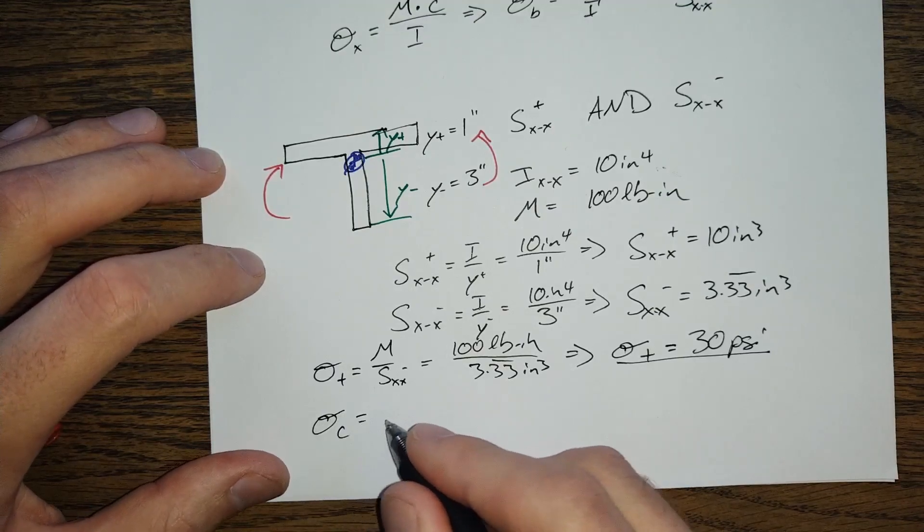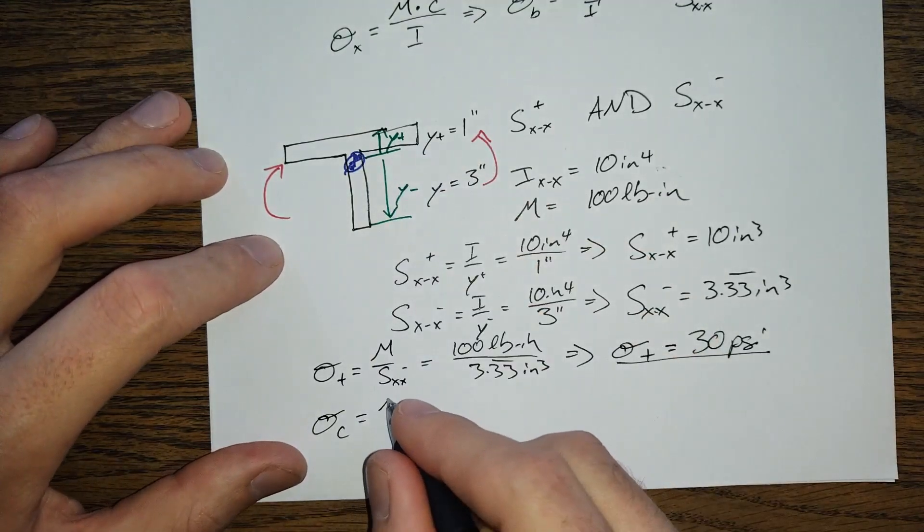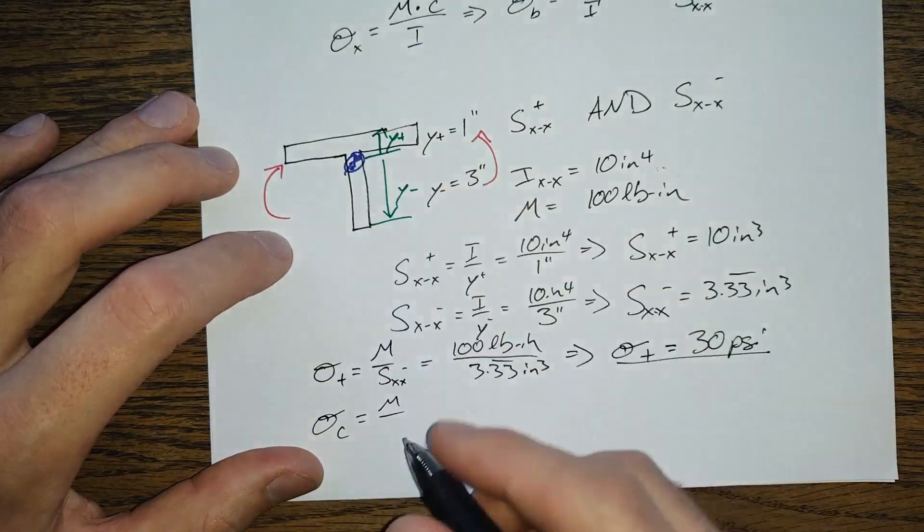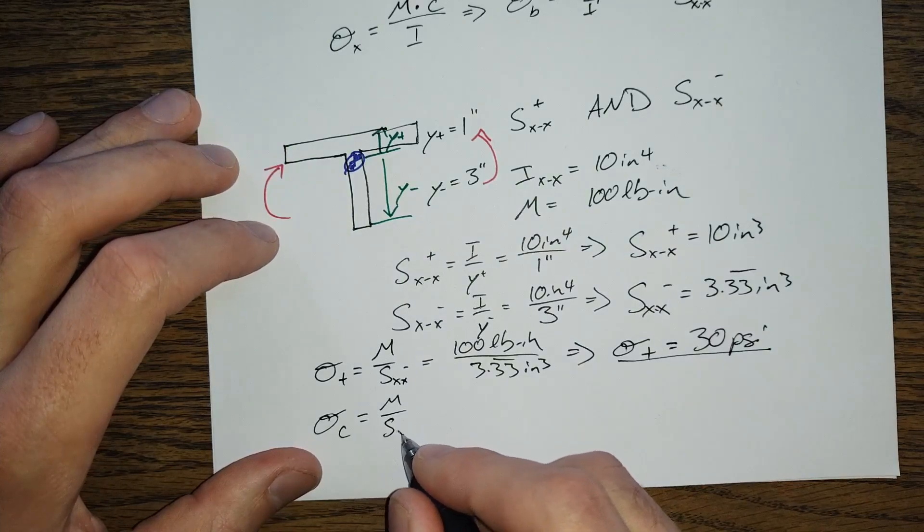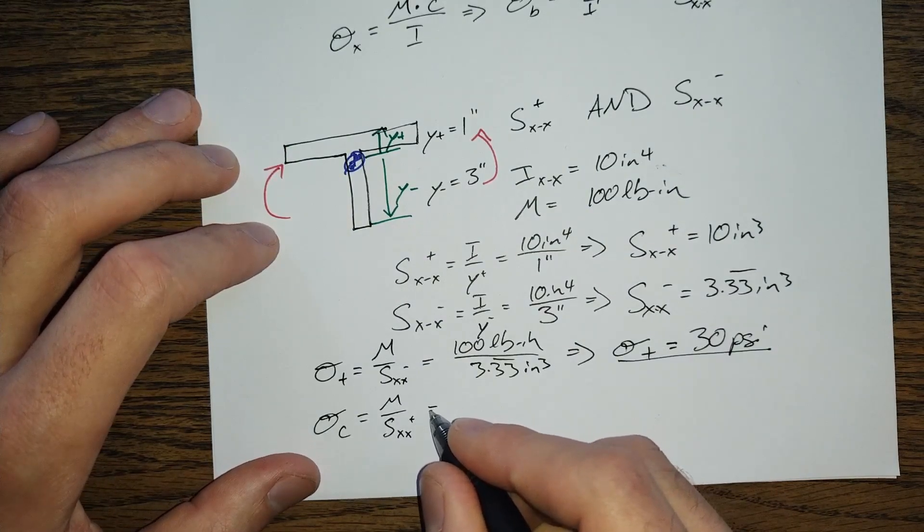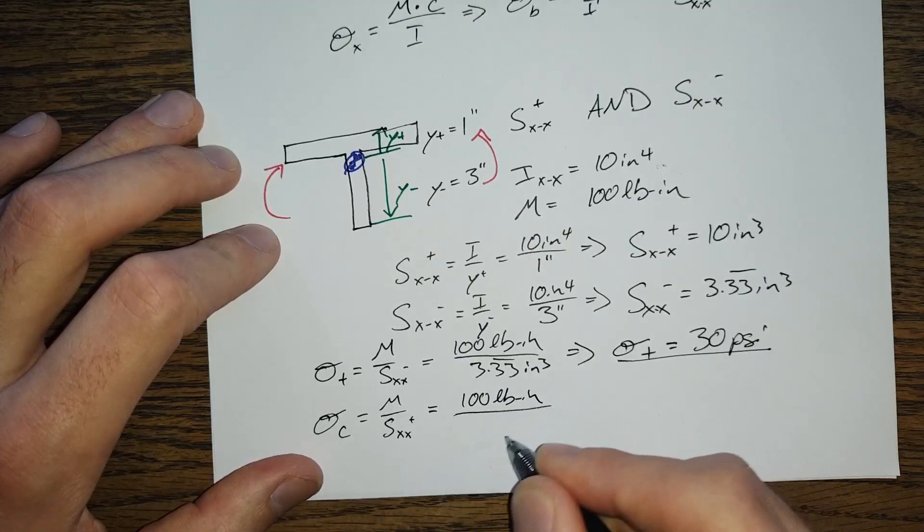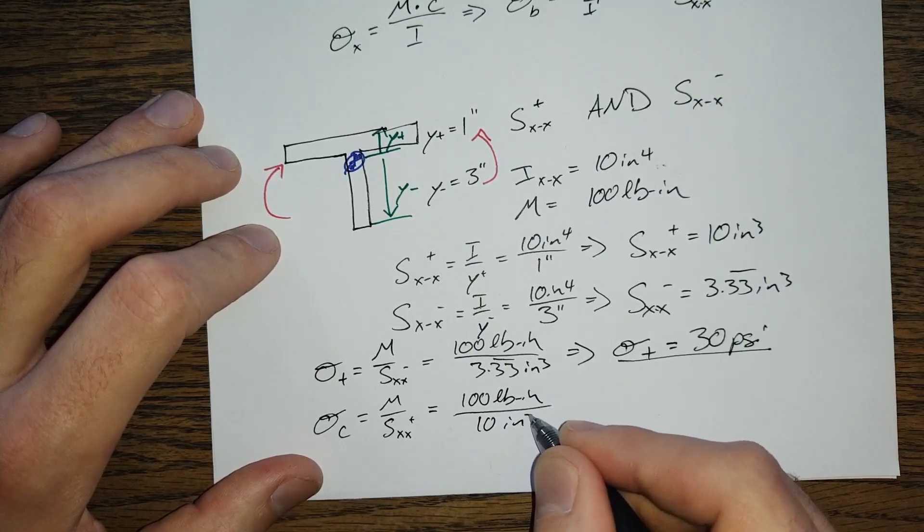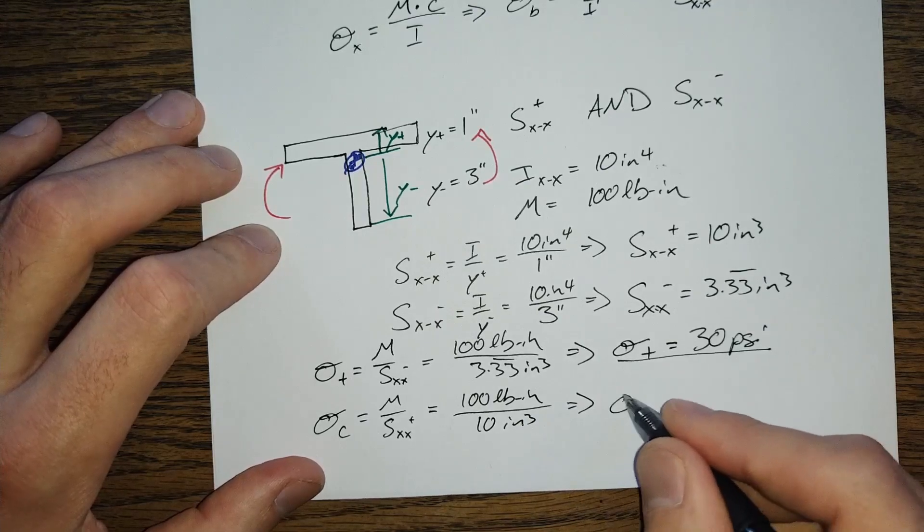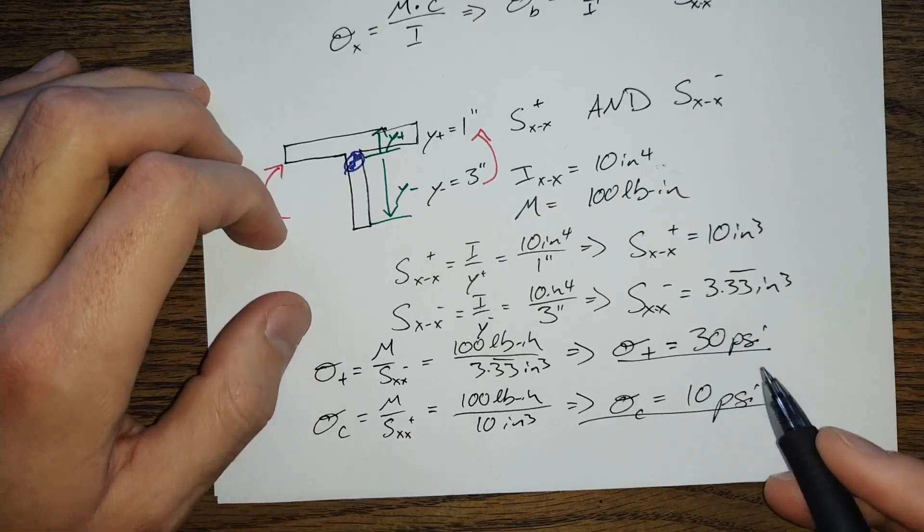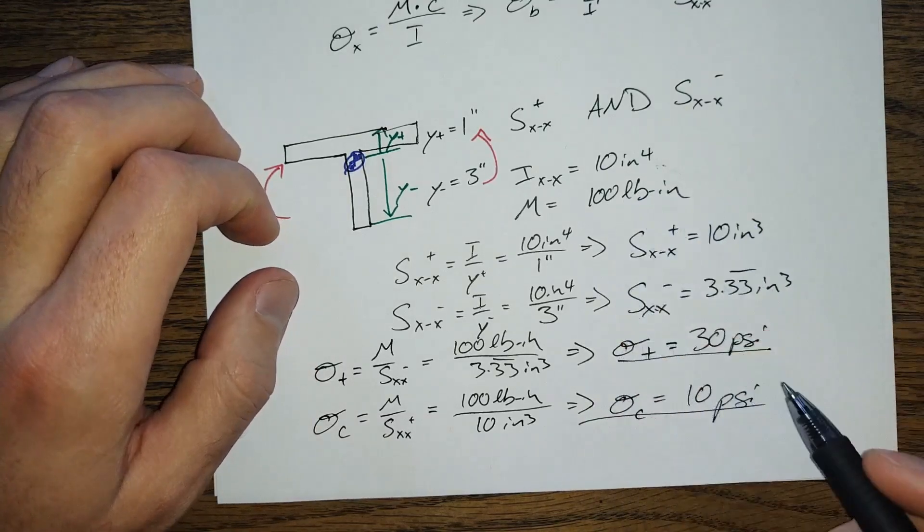Similarly, this compressive stress, the peak compressive stress in the top fiber up here is going to be SXX plus is equal to 100 pound inches over 10 inches cubed. Our compressive stress is only 10 PSI, which, again, much lower. Maybe I should have called this kip inches or whatever.